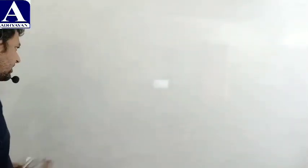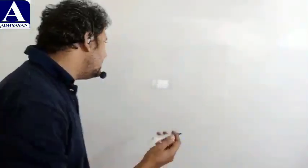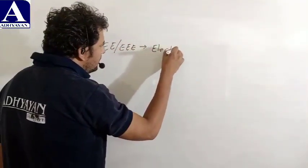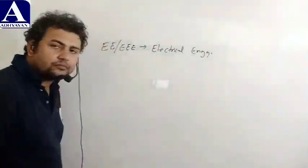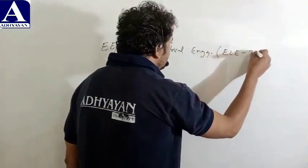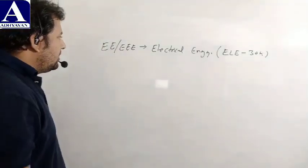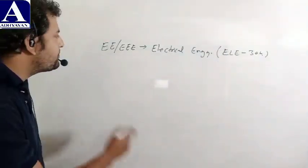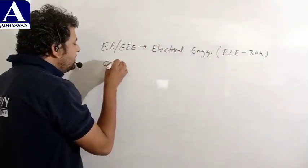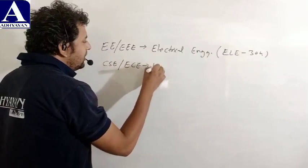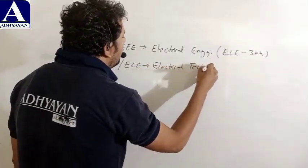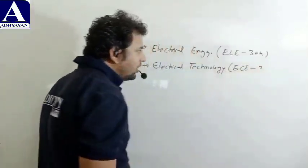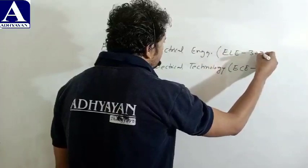जो subject हम लोग आज discuss करने जा रहे हैं, double E या triple E में यह paper electrical engineering के नाम से मिलेगा, code है ELE304। JUT में third semester में इन दोनों branches का code 304 है। Same paper CSE और ECE में electrical technology के नाम से मिलेगा, जहाँ code ECE304 है और ELE303 है।